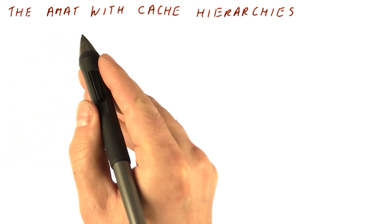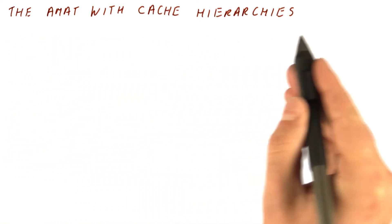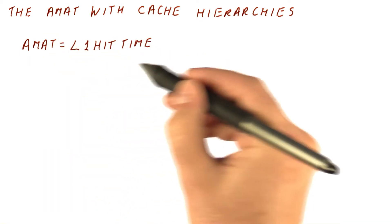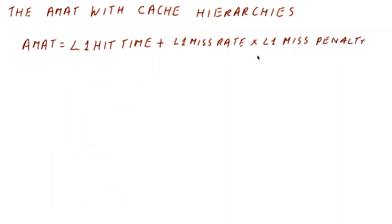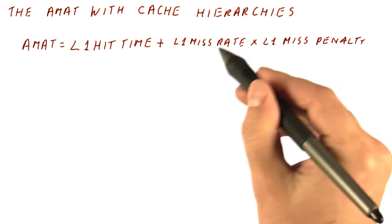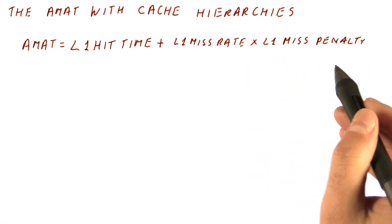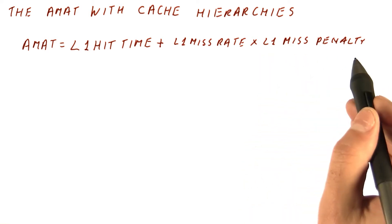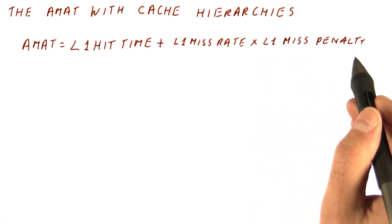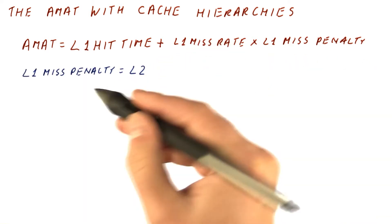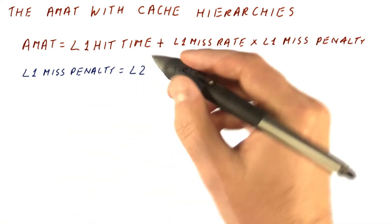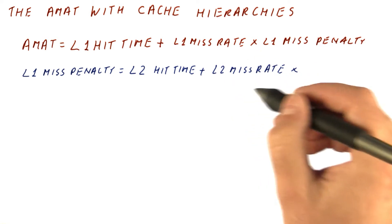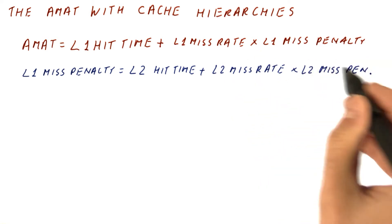Let's look at the AMAT equation when we have a cache hierarchy. The AMAT is still equal to L1 hit time plus the L1 miss rate times the L1 miss penalty. But it used to stop here and the L1 miss penalty would simply be the memory access time. Now we have that the L1 miss penalty is the L2 hit time plus the L2 miss rate times the L2 miss penalty.